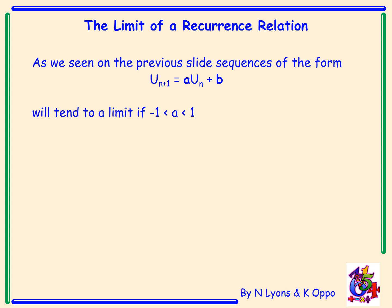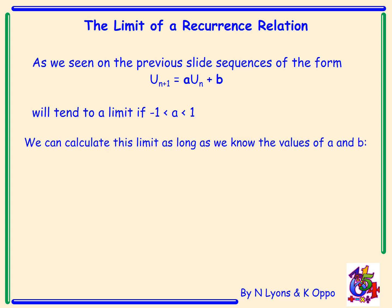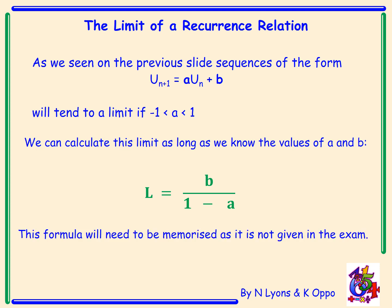The limit of a recurrence relation: as we've seen, sequences of the form u_(n+1) = a·u_n + b will tend to a limit if a lies between minus 1 and 1. We can calculate this limit as long as we know the values of a and b, and the formula for this limit is b over 1 minus a. This formula will need to be memorised — it is not given in the exam.